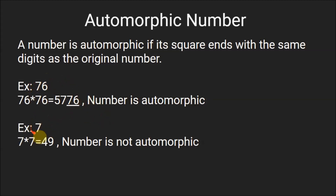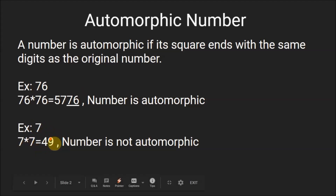For example, if a number is 7 then its square will be 7 x 7, which equals 49. The last digit, that is 9, is not equal to 7. So this is not an automorphic number.